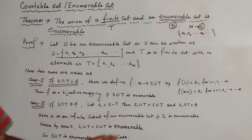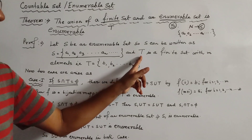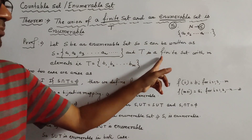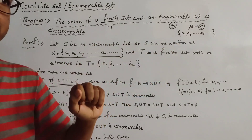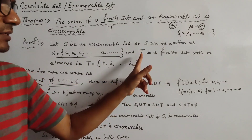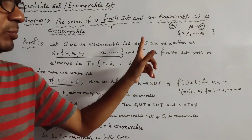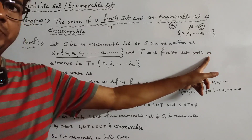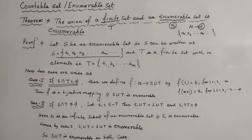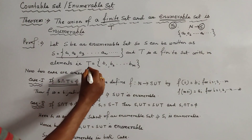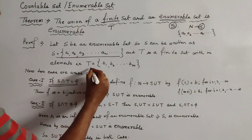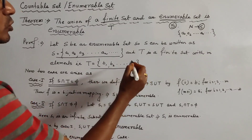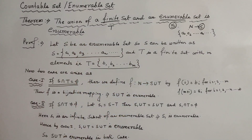Since T is a finite set, let the number of elements of T be M. So the set T can be written as T = {B₁, B₂, ..., B_M}.